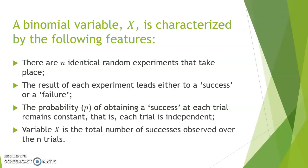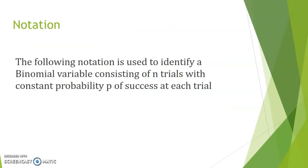When it comes to representing the binomial law or the binomial variable, we will say that X is a binomial variable if it follows B for binomial, with n for the number of trials and p the probability of a success at every trial.